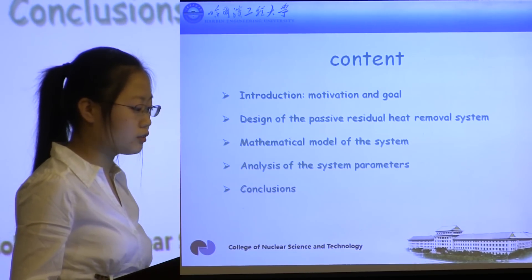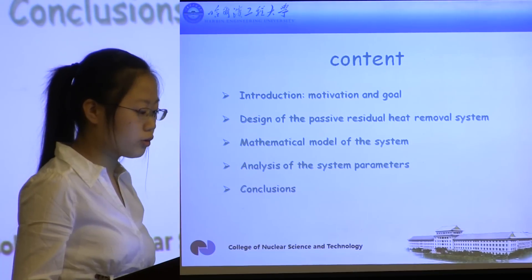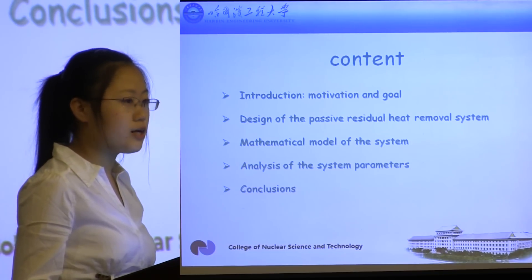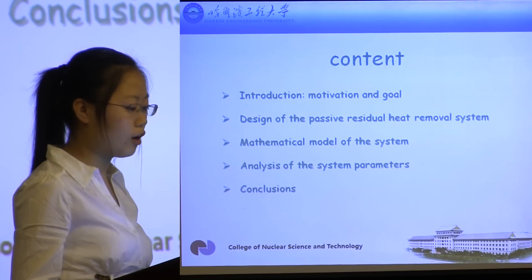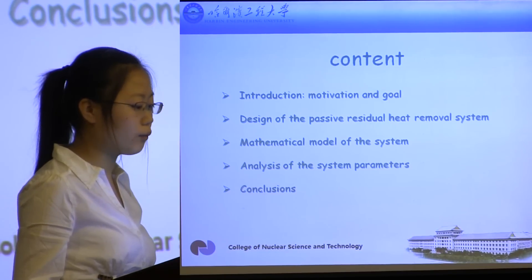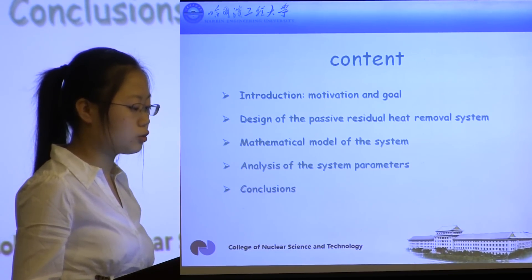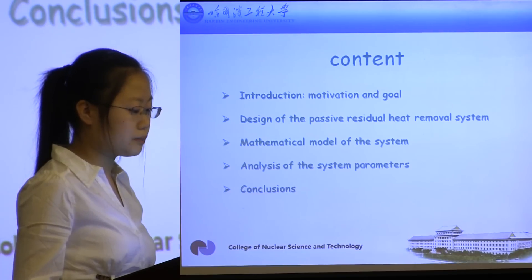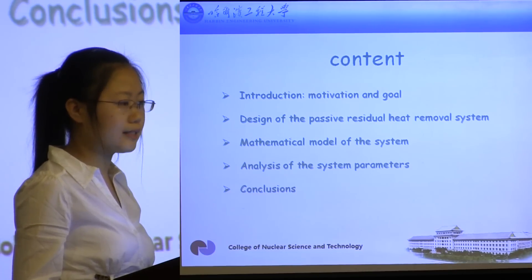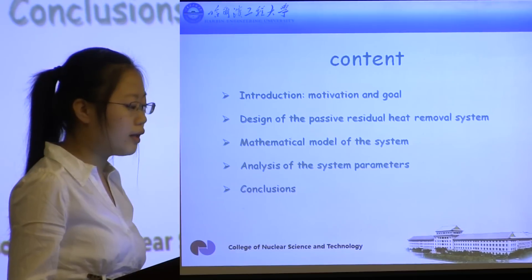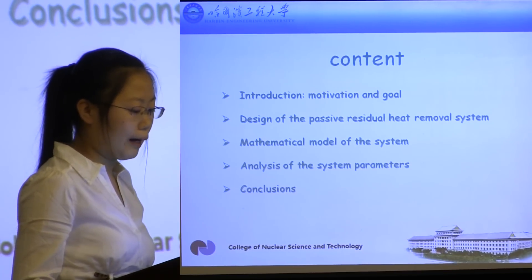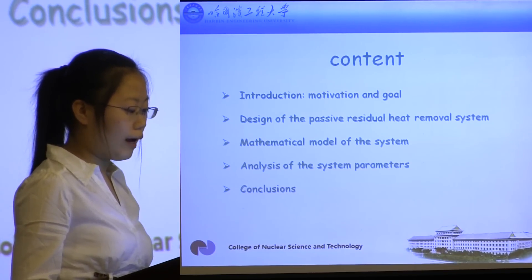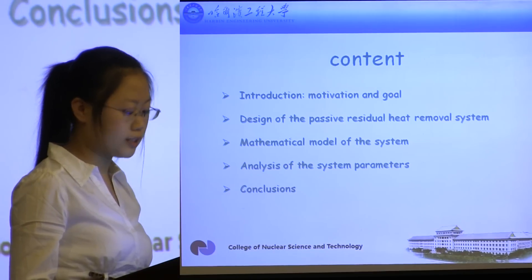First is to introduce the motivation and goal. Then give a description of the design of the Passive Residual Heat Removal System. The third part is to introduce the mathematical model used in the system. Then analysis of the system parameters, and finally give the conclusions.